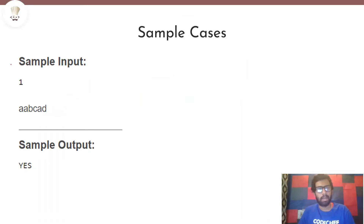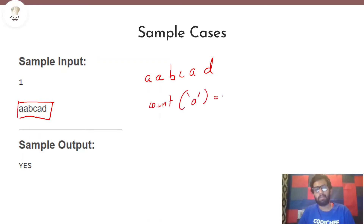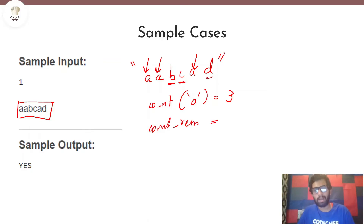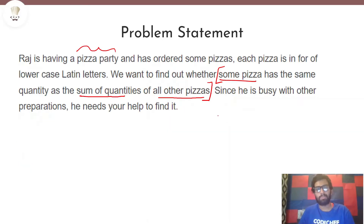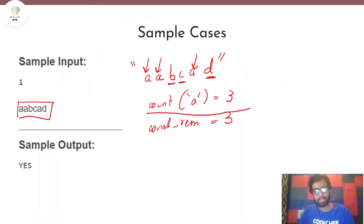Let's understand this with our test case. Here t equals 1 denoting there is only one test case, and this test case consists of the string 'aabcad'. The count of pizza named 'a' is 3 because there are three a's in this whole string. The count of the remaining pizzas is 1, 2, and 3 respectively. The count of pizza 'a' is 3 and the sum of the quantities of the remaining pizzas is also 3. Since both of them match, we output yes.